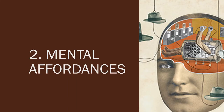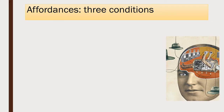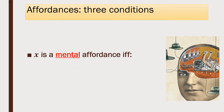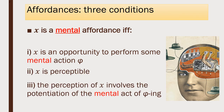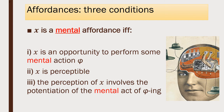Hopefully you've got a grip on what it means for something to afford a bodily action, but I want to argue that there can also be affordances for mental action. In the vast literature on affordances, almost every example of an afforded action involves bodily action. I want to say there are also affordances for mental actions — a claim that only crops up very rarely in the literature. So what is a mental affordance? We can just tweak the three conditions to give an account: something is a mental affordance if it presents an opportunity to perform some mental action phi, this has to be perceptible, and the perception of X has to involve the potentiation of the mental act of phi. If there are such cases, then the mental affordance hypothesis is true.